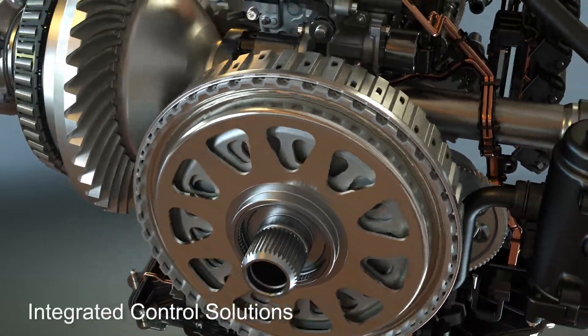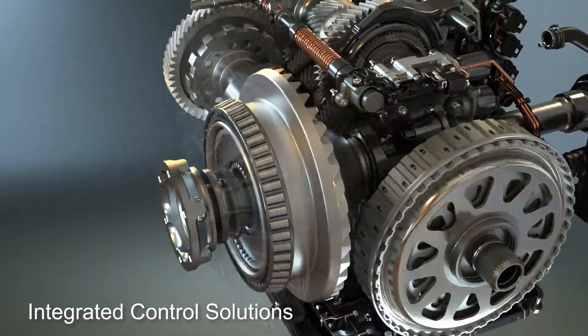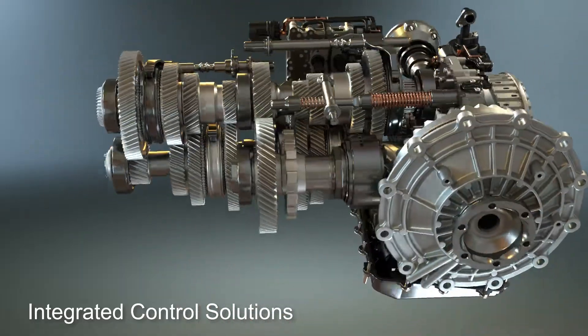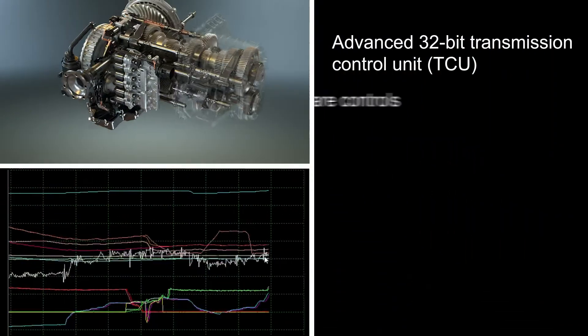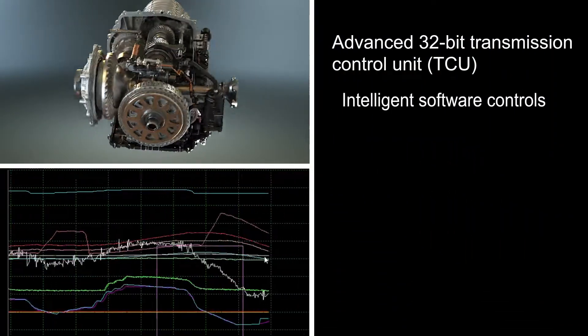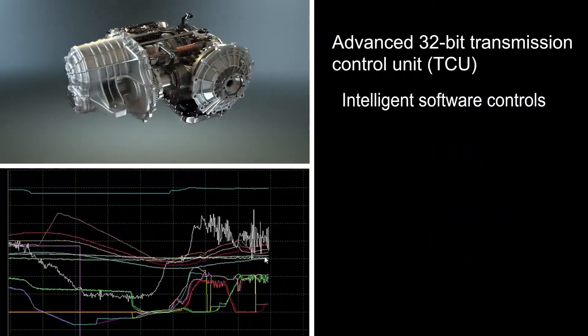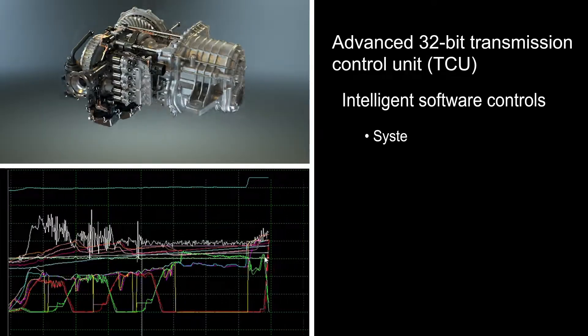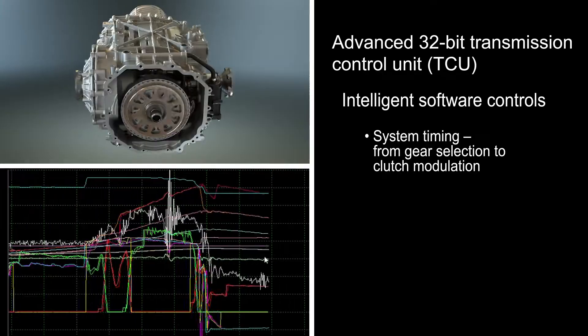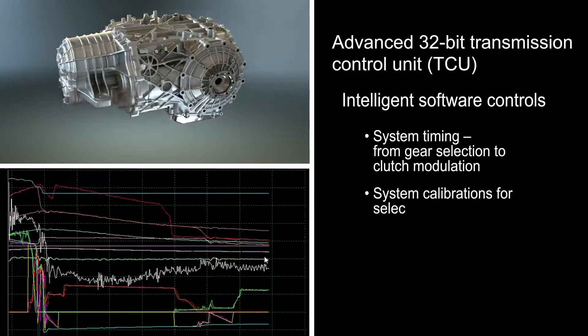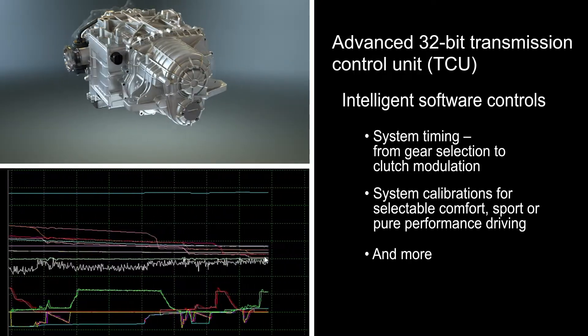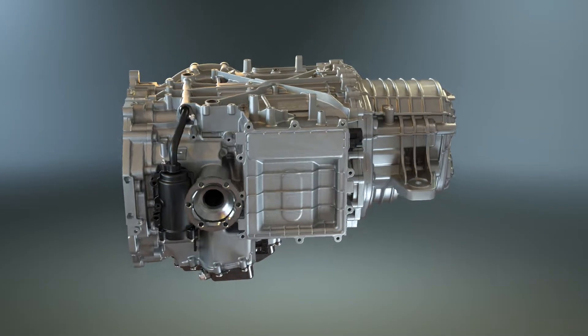Integrated control solutions cover the DCT from top to bottom, with an advanced 32-bit transmission control unit. Its intelligent software choreographs the characteristics and personality of the Tremec DCT, including system timing from gear selection to clutch modulation, while controlling all system calibrations for fun-to-drive vehicle targets.